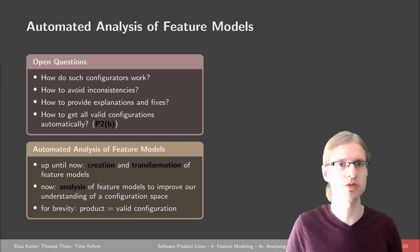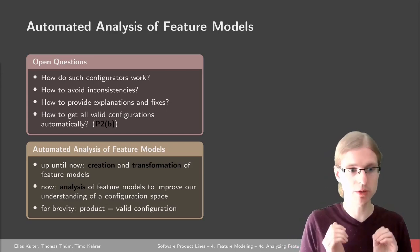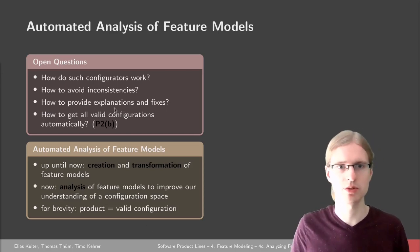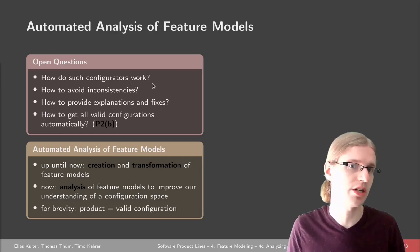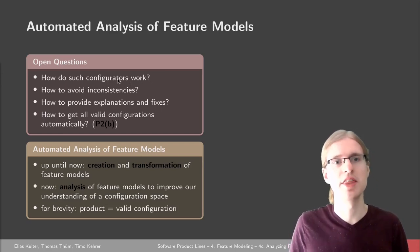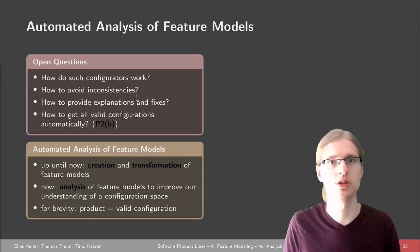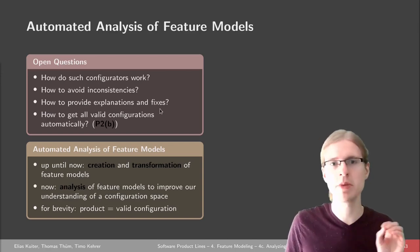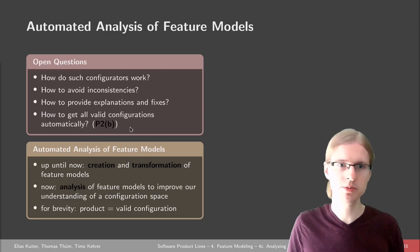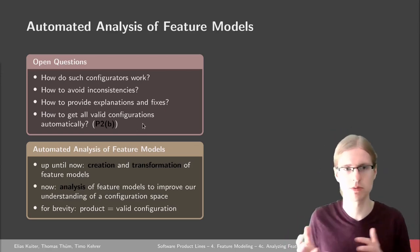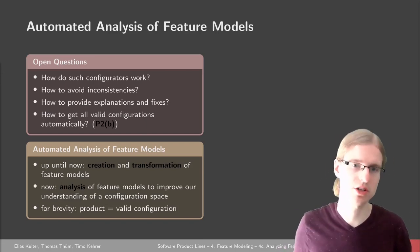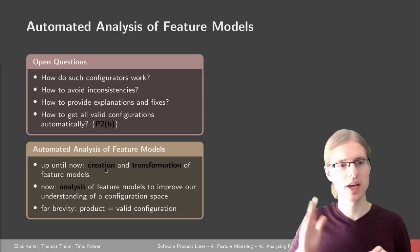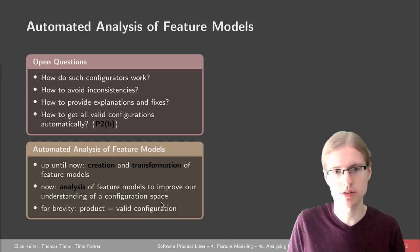One thing that might help if we want to address such issues is to take our feature models, which we have specified, translate them into formulas, and analyze them automatically. By this, we can try to find out how valid configurators work and how we can build a configurator that avoids inconsistencies like the one Thomas showed. It would also provide explanations if there's an error, or fixes if you want to undo a decision and make a better one.